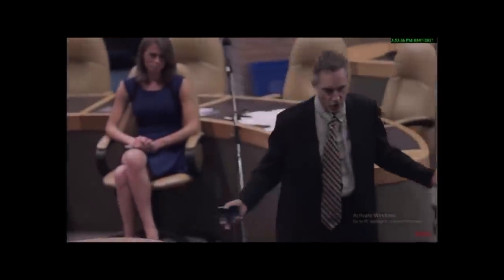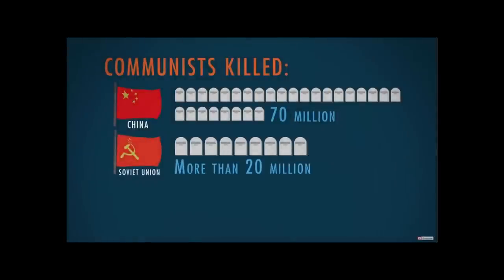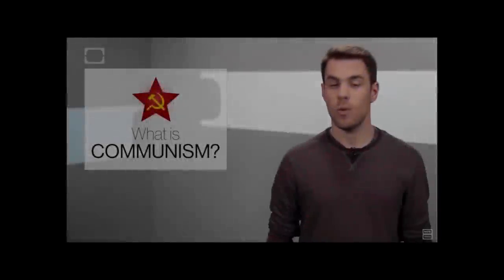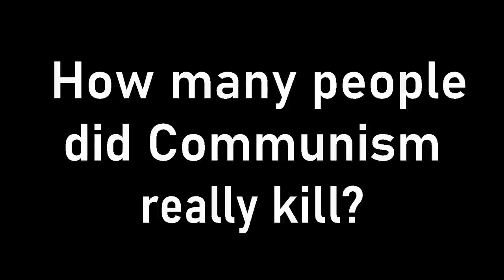How many millions of people have to die before you might admit that you're wrong? Well, obviously more than 100 million, because that's the approximate total — and that's probably an underestimate. Communists killed 70 million people in China, more than 20 million people in the Soviet Union, not including about 5 million Ukrainians. Great in theory, while disastrous in practice.